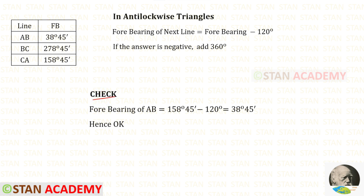We already know the forebearing of AB: 38 degrees 45 minutes. Using this, we can verify once more. 158 degrees 45 minutes minus 120 degrees gives us 38 degrees 45 minutes. Since both values are the same, hence OK.